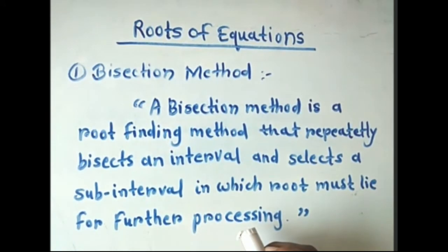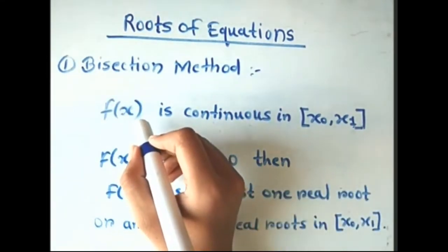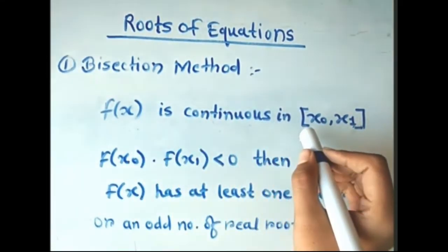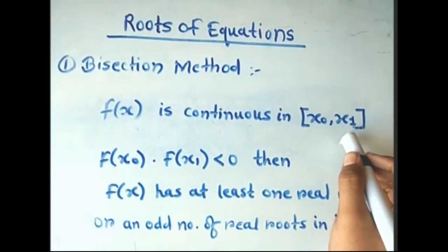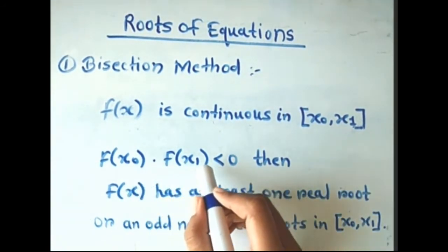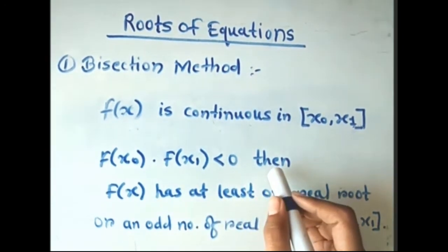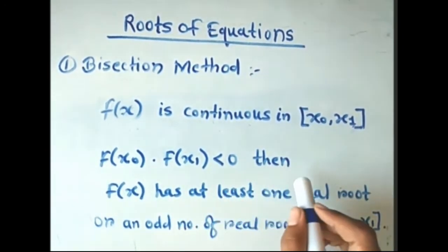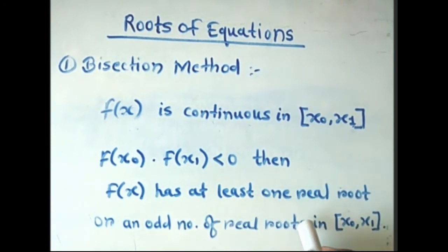This method is based upon successive applications of the intermediate value theorem. If the function f(x) is continuous in the interval [x₀, x₁], and if f(x₀) × f(x₁) < 0, then f(x) has at least one real root, or an odd number of real roots, in the interval [x₀, x₁].